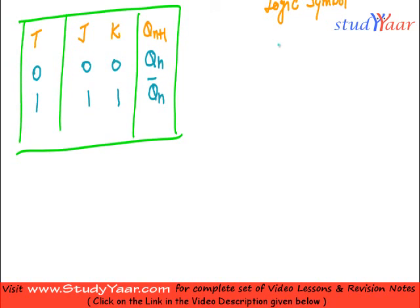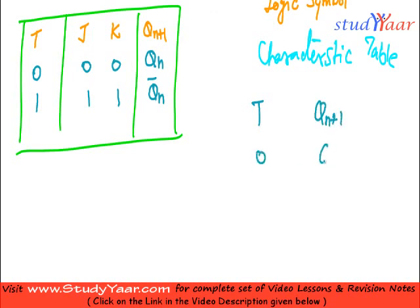Characteristic table is: you have your T and you have your Q-n plus 1. When T is 0, Q-n plus 1 is Q-n. And when T is 1, Q-n plus 1 is Q-n-bar. So this is your characteristic table.